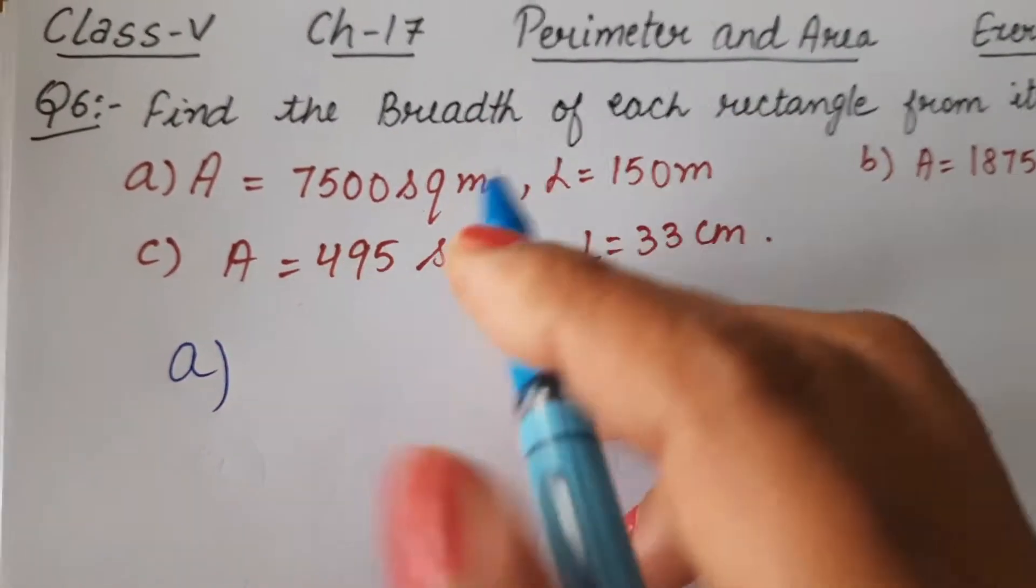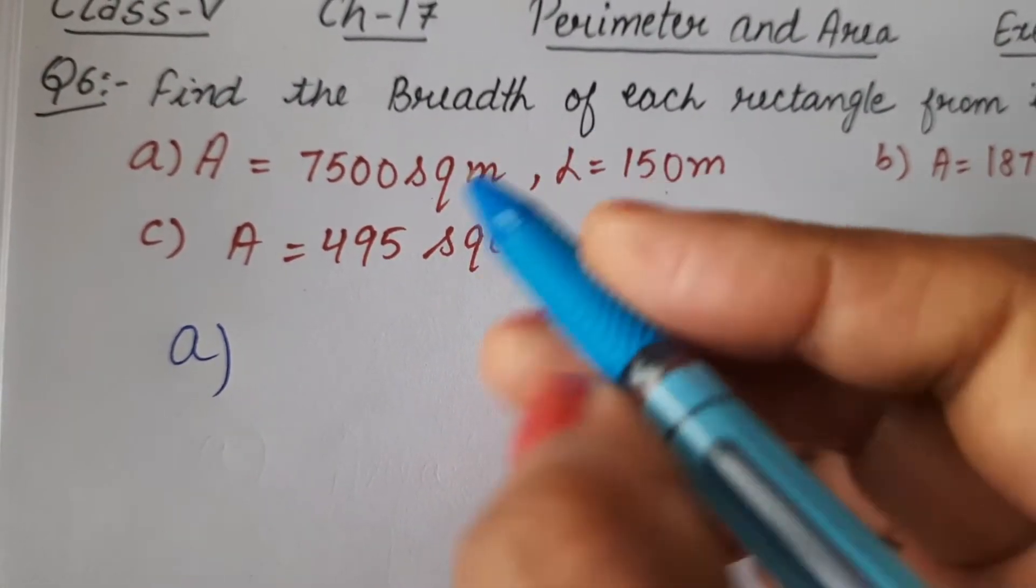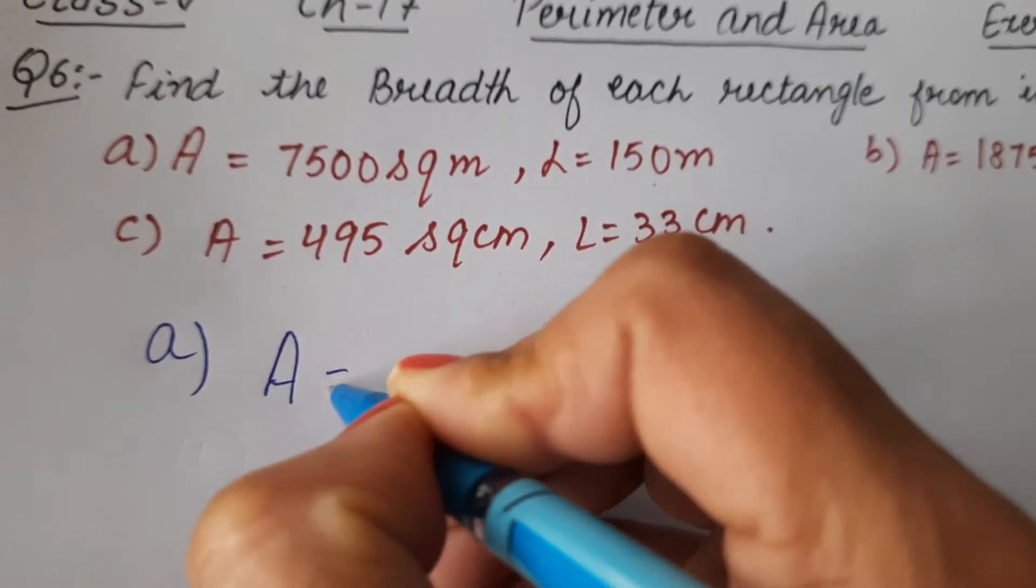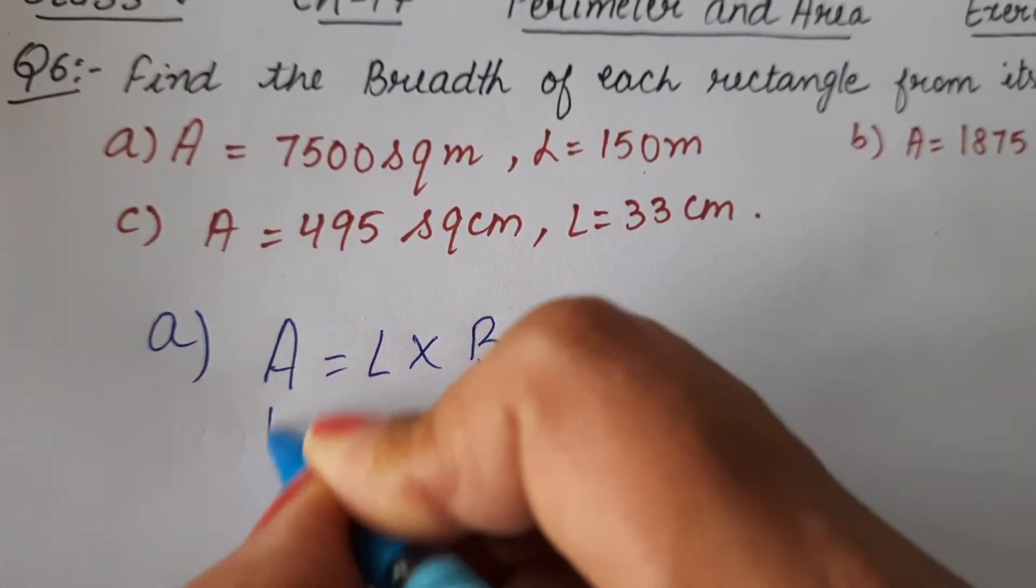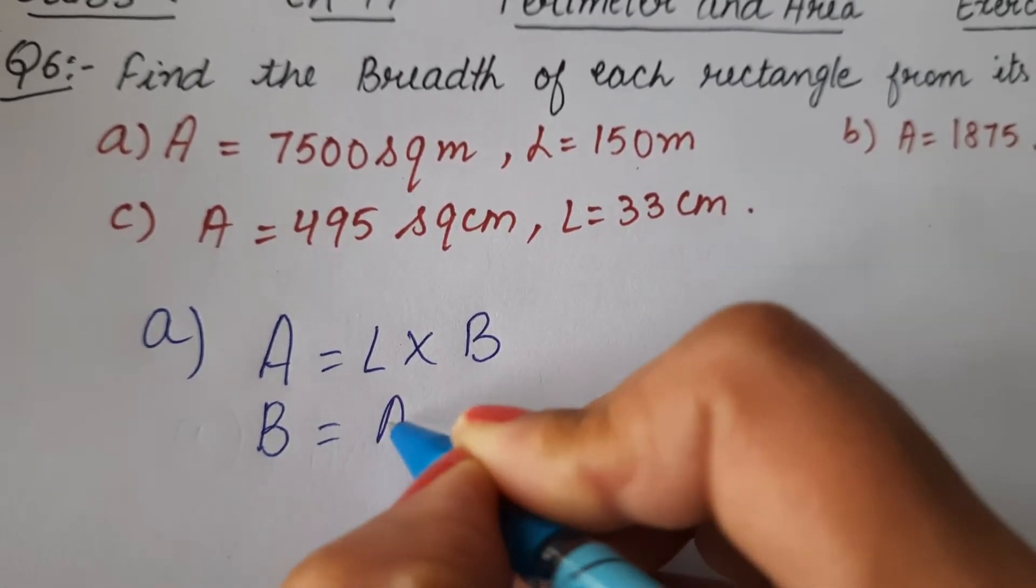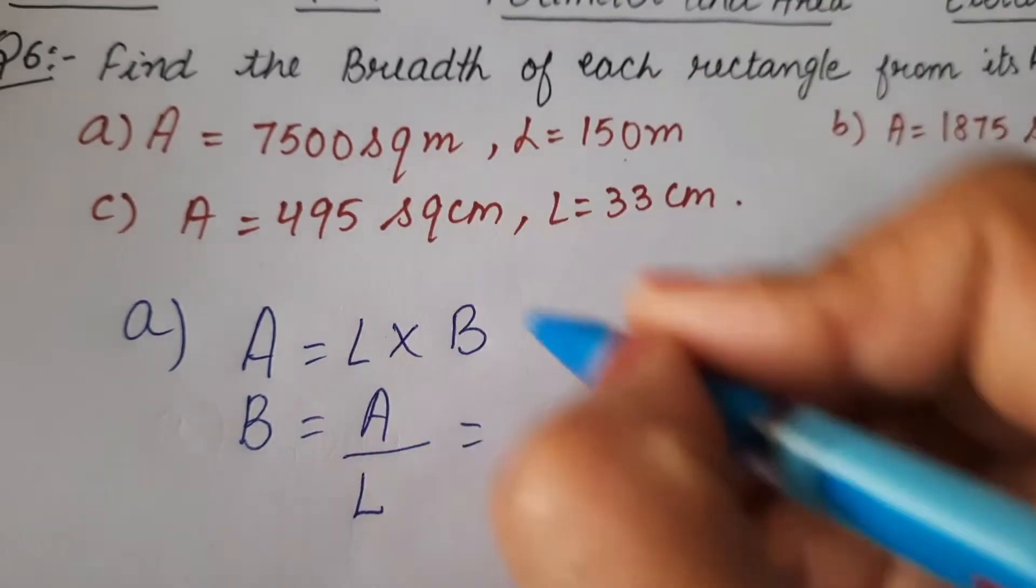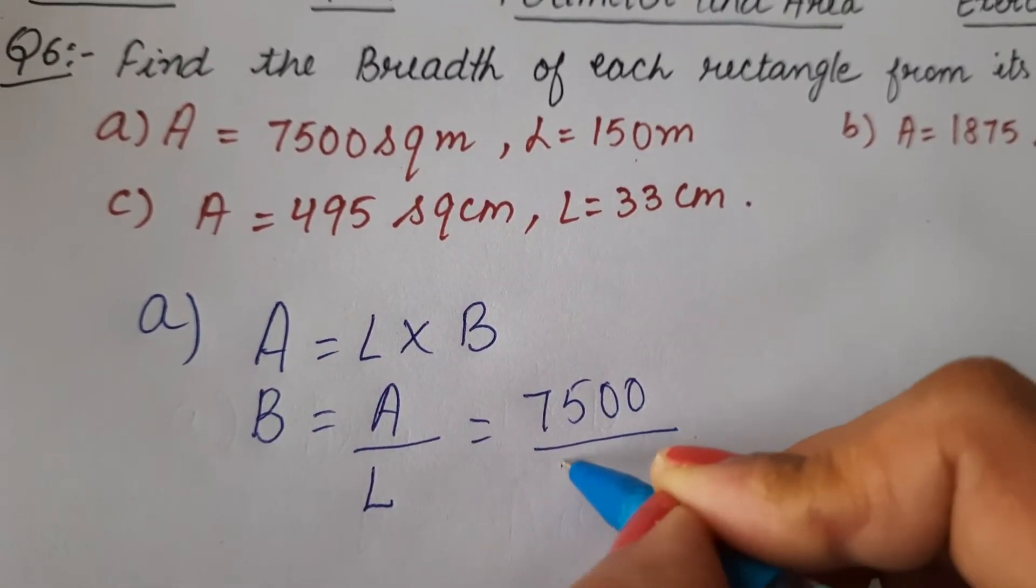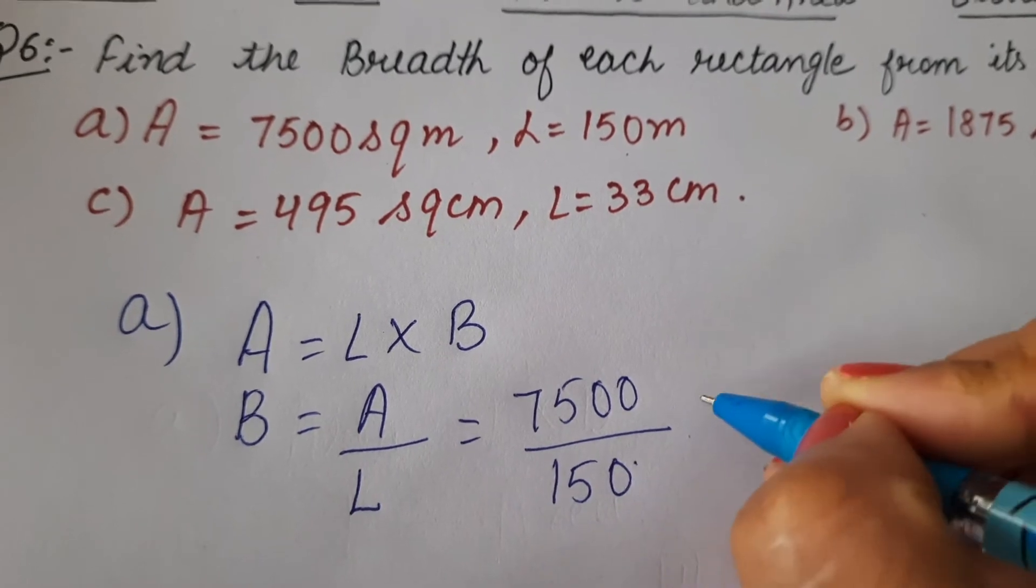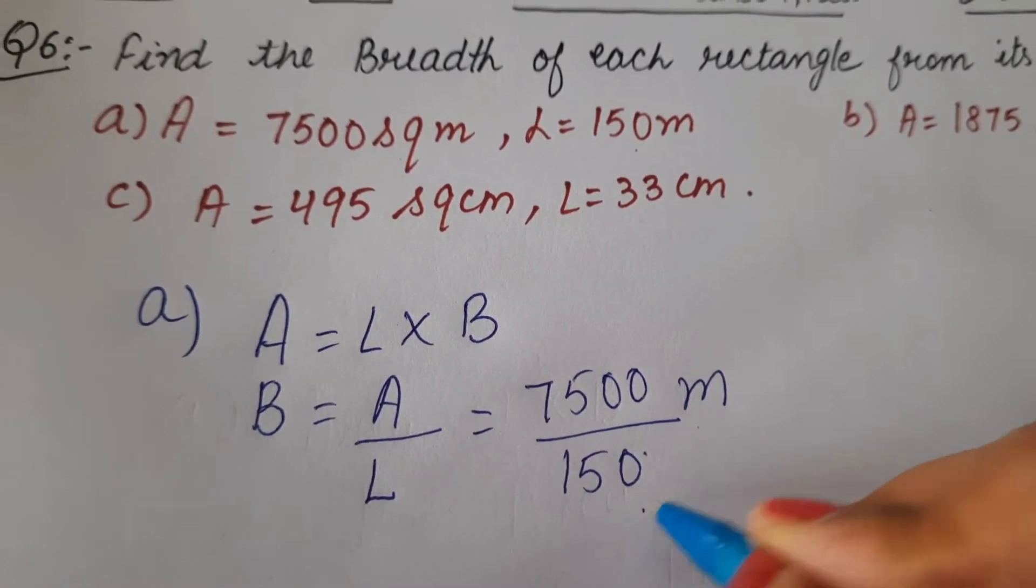In part A, area is 7500 square meters and length is 150 meters. We know that area equals length multiplied by breadth, so if we have to find the breadth of rectangle, the formula will be area divided by length. So breadth will be 7500 divided by 150.